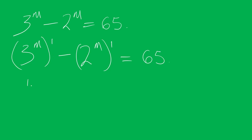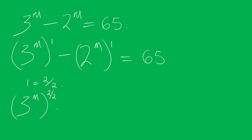Now, you know 1 is the same thing as 2 divided by 2. Substituting 2 divided by 2 into this, you have 3 to the power of m, all to the power of 2 divided by 2, minus 2 to the power of m, all to the power of 2 divided by 2, equal to 65.